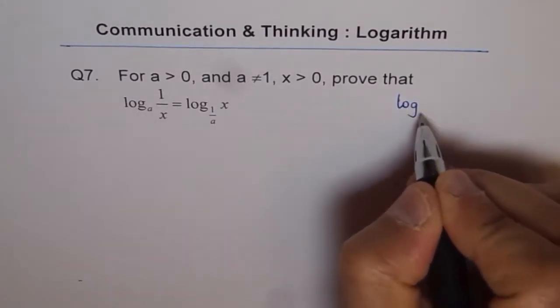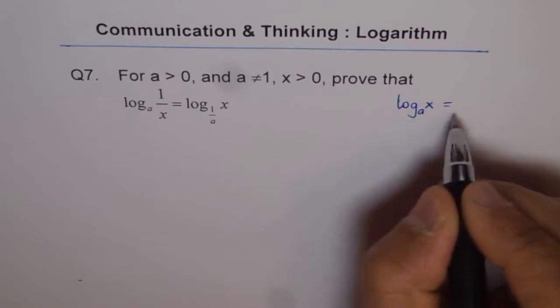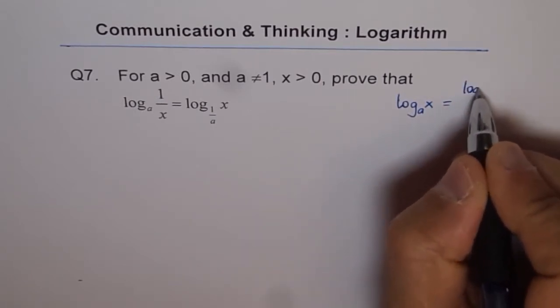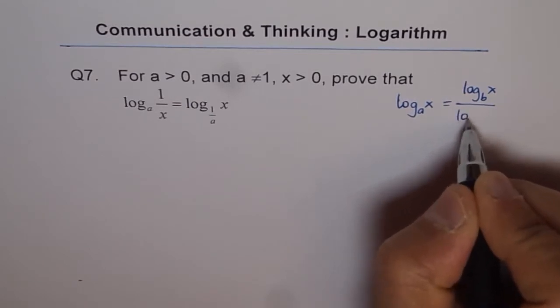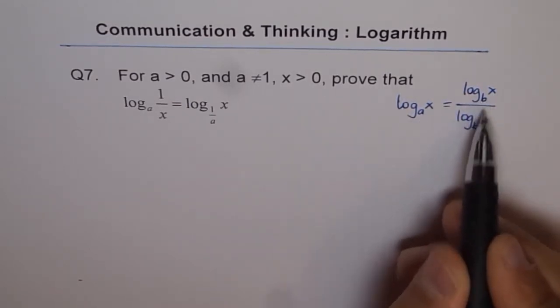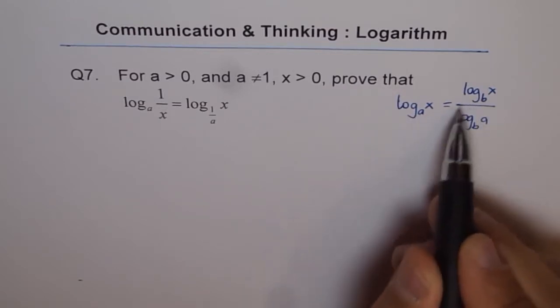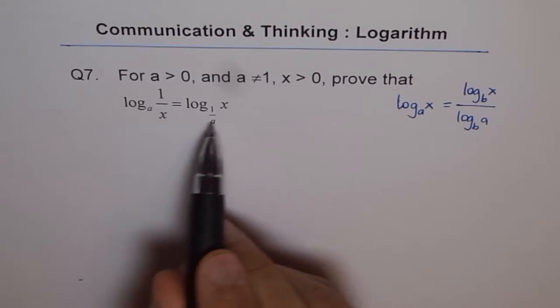Let's say we have log_a(x) and we want to change the base to let's say b. In that case, log_b(x) over log_b(a). That is how we change base from a to b. So we will apply this change of base formula to solve this identity.